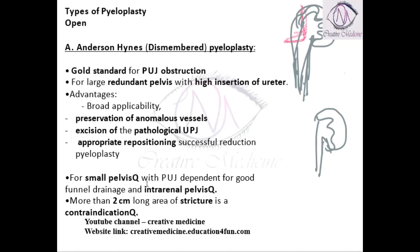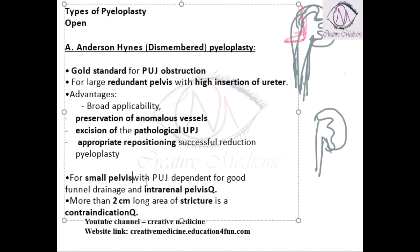Anderson-Heinz pyeloplasty can also be used for a smaller pelvis with pelvic ureteric junction obstruction, which is important for good funneled drainage, and it can also be used for an intrarenal pelvis. However, if the stricture is more than two centimeters, it is a contraindication for Anderson-Heinz pyeloplasty, as it is very difficult to remove a stricture longer than two centimeters.